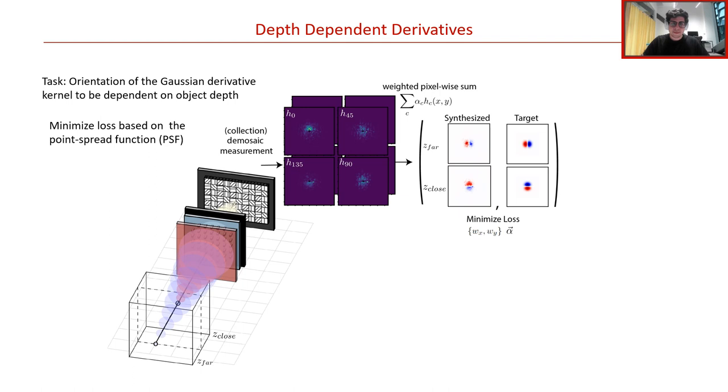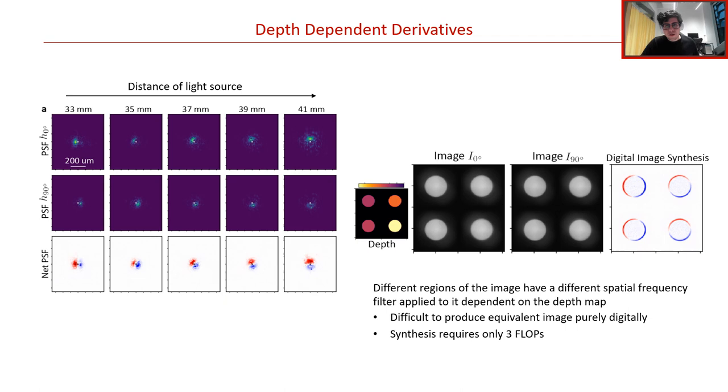Using a loss based on the point spread function, we also show that one can optically encode frequency filtering operations that have a prescribed depth dependence. In this case, we chose the task of producing a Gaussian derivative with an orientation that rotates with respect to depth. To do this, we consider a set of point sources at different distances and compute the set of component point spread functions and the synthesized point spread function for each case. We then optimize for a single set of synthesis weights, alpha, and a metasurface that minimizes the loss taken between the stack of synthesized point spread functions and the target filtering kernels. The results of this optimization are shown here. Although we optimized over four point spread functions, the camera learns to use just a pair of images due to the use of the minimum bias regularizer. The two component point spread functions are shown on the left for several distances within the optimization range, and they synthesize an approximation to the rotating Gaussian derivative filter.